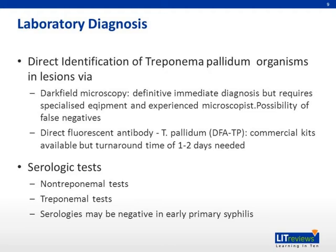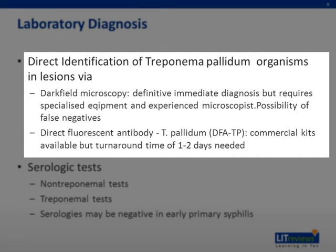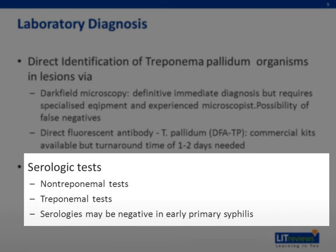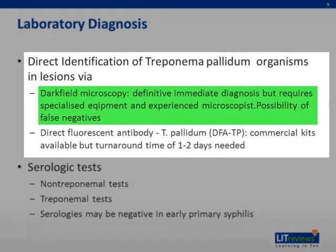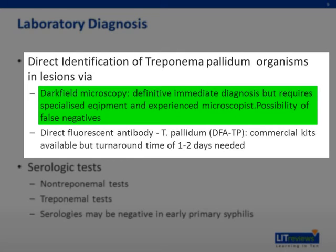Laboratory diagnosis of primary syphilis depends on identification of Treponema pallidum in lesions via dark field microscopy or direct fluorescent antibody testing. Serologic tests — both non-treponemal and treponemal tests — may not be positive in the primary stage of the infection. On dark field microscopy, one looks for Treponema pallidum morphology and motility; the advantage is a definite immediate diagnosis. Disadvantages include the requirement for specialized equipment and an experienced microscopist, possible confusion with other pathogenic and non-pathogenic spirochetes, the need to perform the test immediately, it is generally not recommended for oral lesions, and there is a possibility of false negatives.